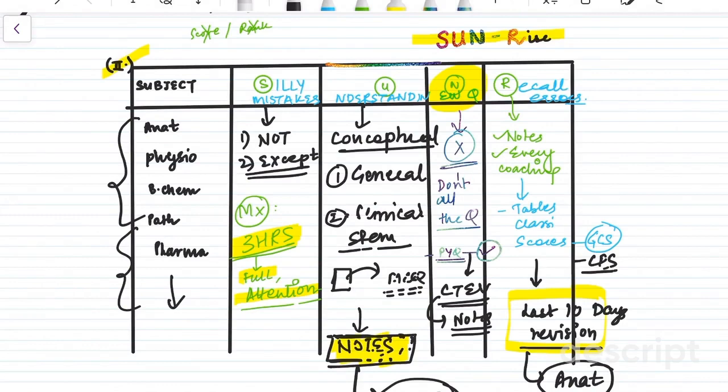So for example, in anatomy, if you've done seven questions wrong, you can see whether they pertain to your silly mistakes, understanding, new questions or recall errors and work accordingly. Where we lack is basically we start seeing the whole subject from one to hundred of our bottom three subjects.